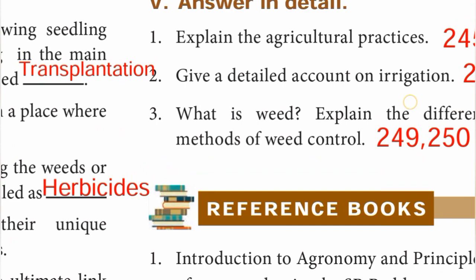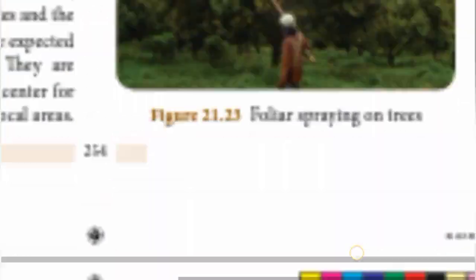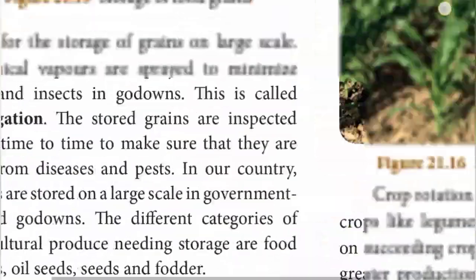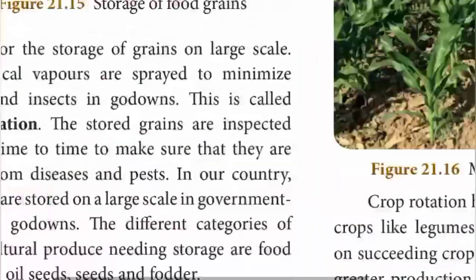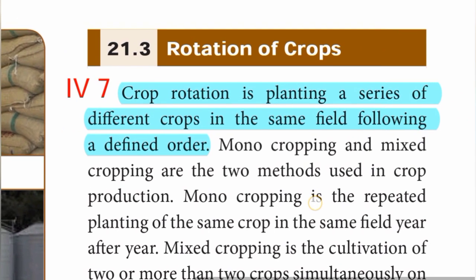Seventh question: what is crop rotation? Page number 251. Crop rotation is the planting of a series of different crops in the same field following a defined order.